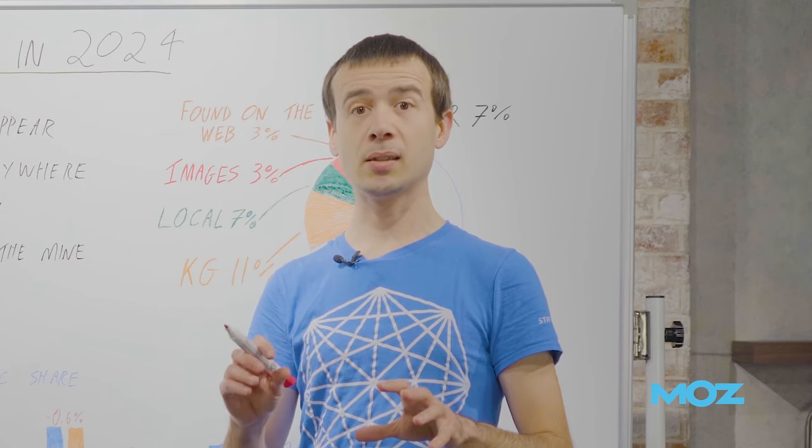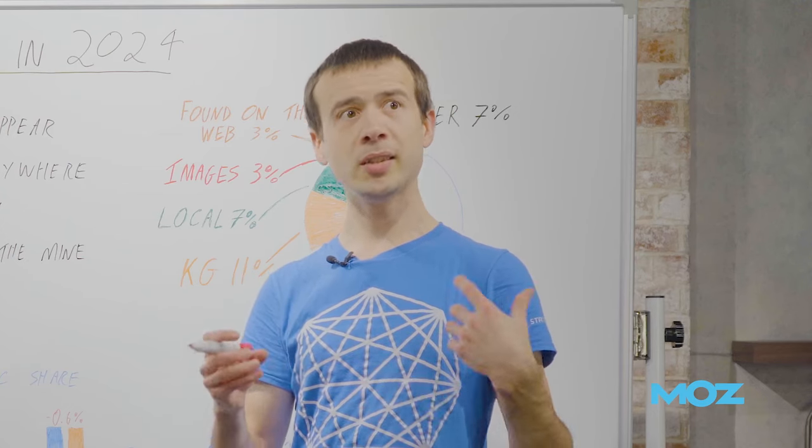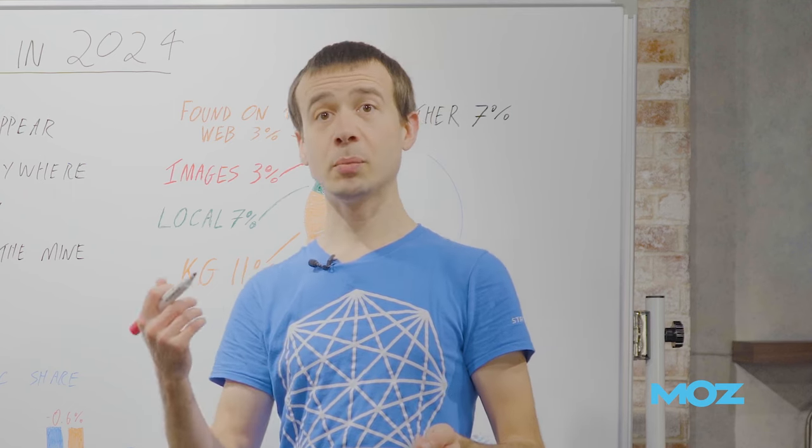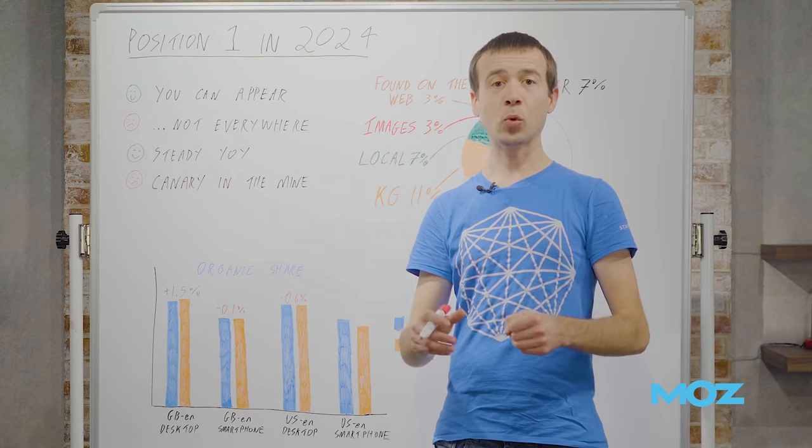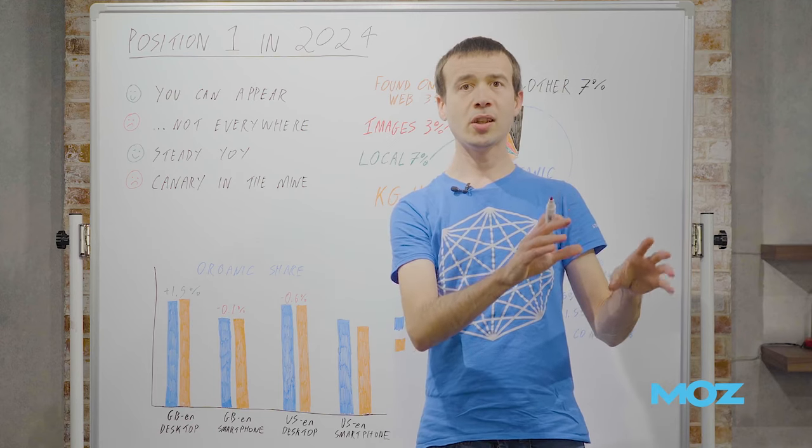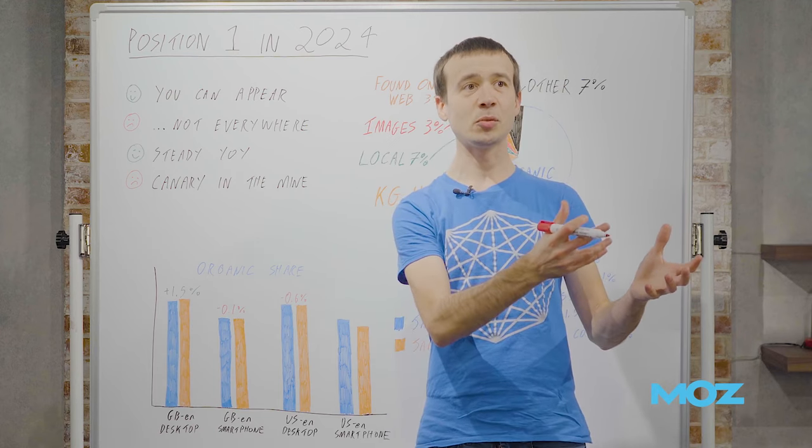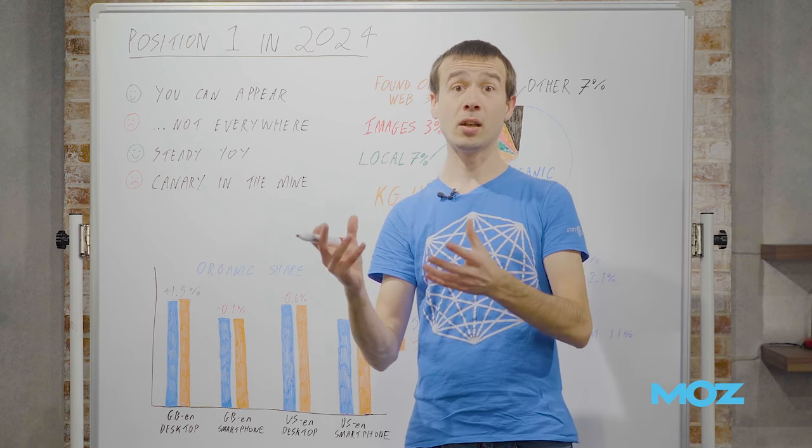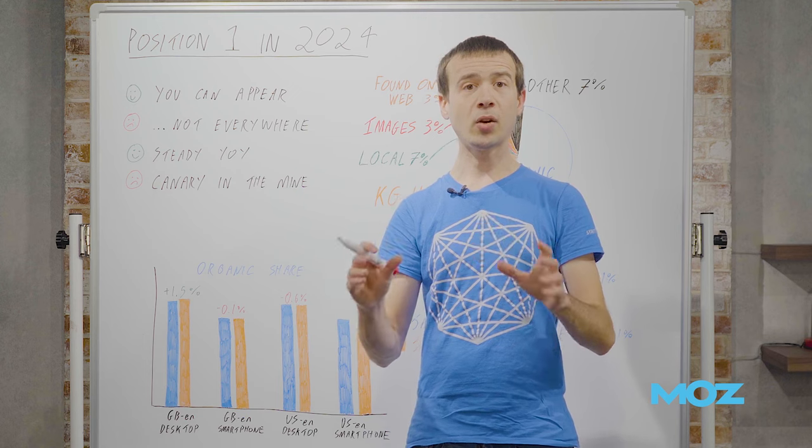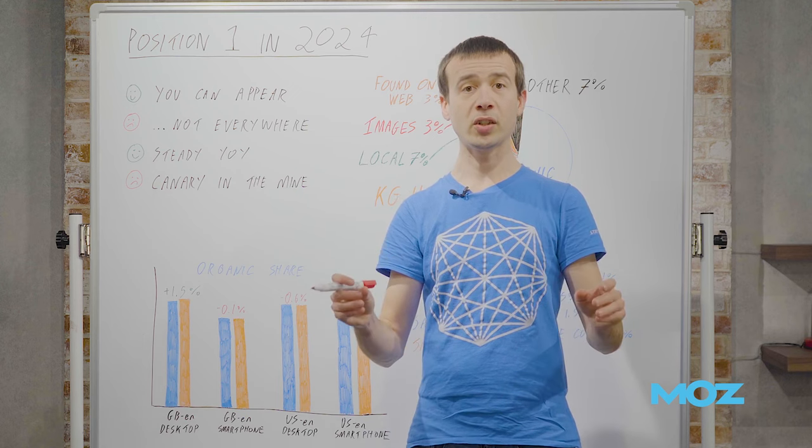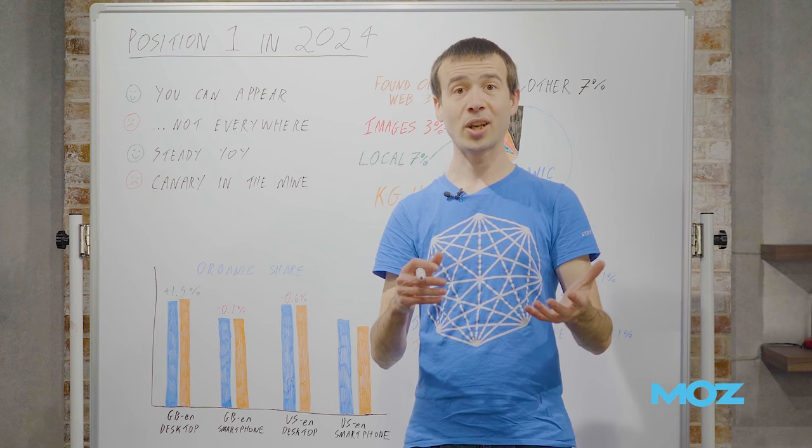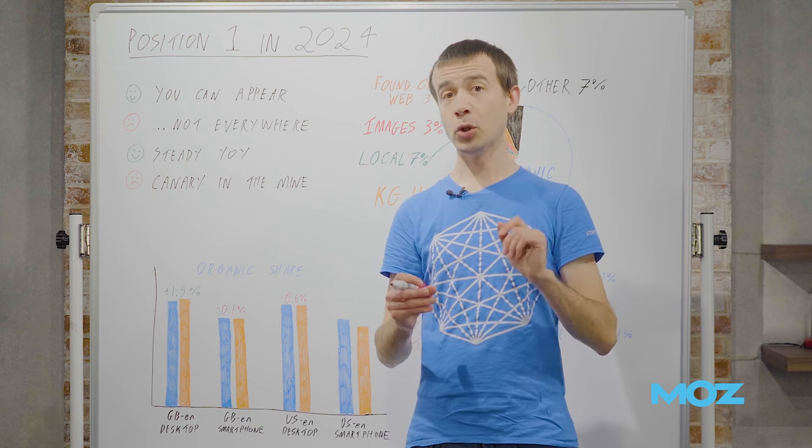I want to talk a bit about what I mean by position one. In STAT, we have this contrast between rank and base rank. By rank, we mean whatever is actually the first thing on the search engine results page. By base rank, we mean the first regular or organic result. Here I'm interested in what is first, no matter what, so it might not be an organic result.